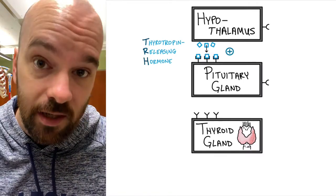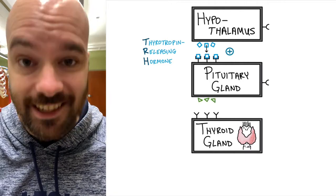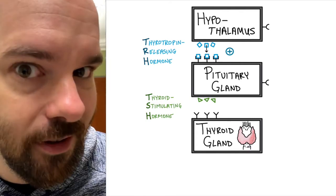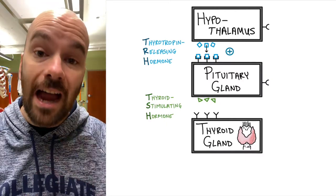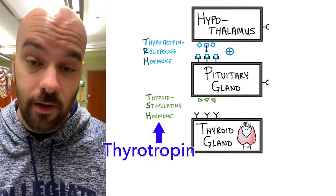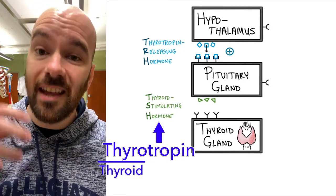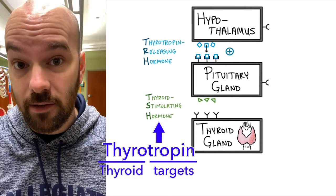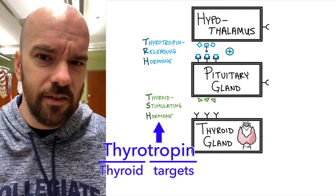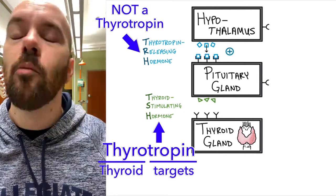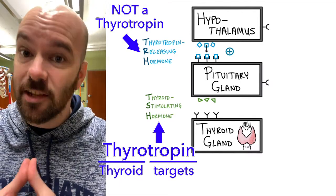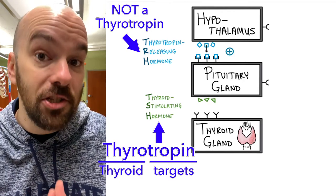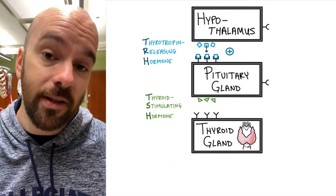Once the pituitary receives input from TRH, it releases its own hormone called TSH, or thyroid stimulating hormone. The name tells you exactly what it does — it stimulates the thyroid. Thyroid stimulating hormone is a thyrotropin: 'thyro' refers to the thyroid gland, and 'tropin' means it targets. So a thyrotropin is a hormone that targets the thyroid gland. TRH is called thyrotropin releasing hormone because it causes the release of a thyrotropin — in other words, it causes the pituitary to release TSH.